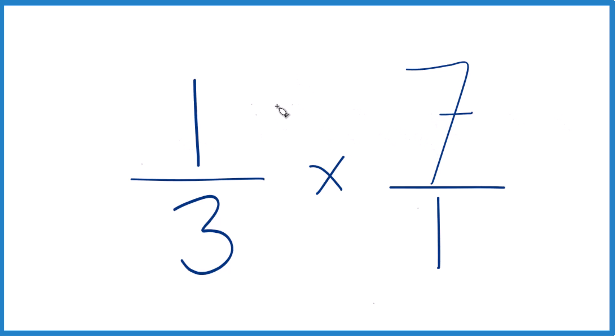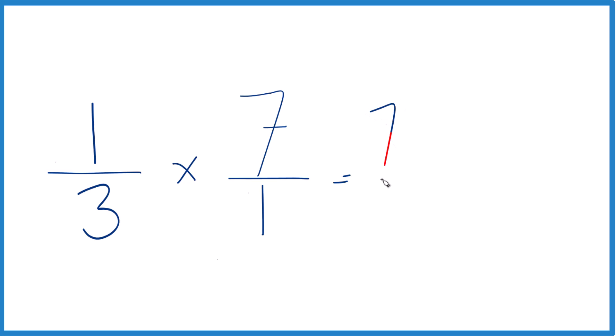Now, with fractions, it's easy to multiply when they're lined up like this. One times seven, that equals seven, and then three times one, that equals three.